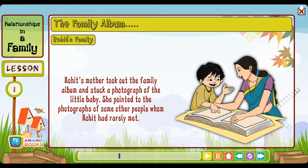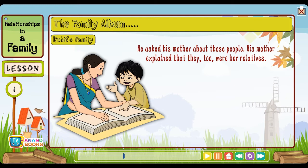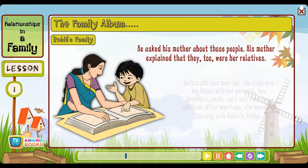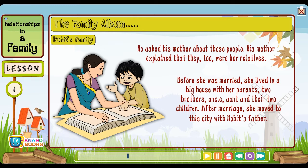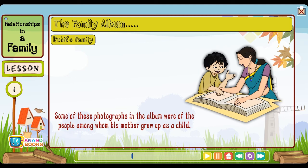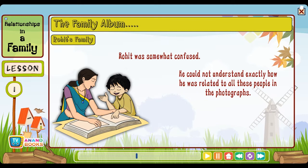Rohit's uncle Satish is still unmarried and is in the USA for higher studies. Rohit's mother took out the family album and stuck a photograph of the little baby. She pointed to the photographs of some other people whom Rohit had rarely met. He asked his mother about those people. His mother explained that they too were her relatives. Before she was married, she lived in a big house with her parents, two brothers, uncle, aunt and their two children. After marriage she moved to this city with Rohit's father.